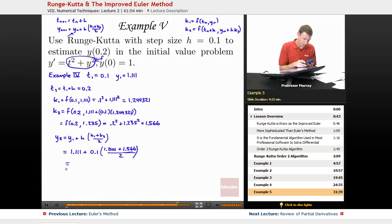So, 1.566 plus 1.244321 divided by 2 times 0.1 plus 1.111. So, what I'm getting on my calculator is 1.25153. And there's some more decimal places after that. But, let me summarize here.